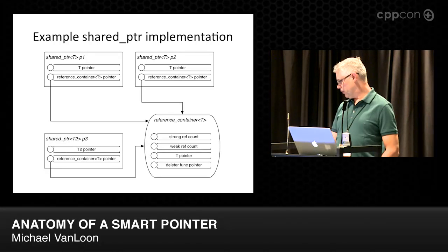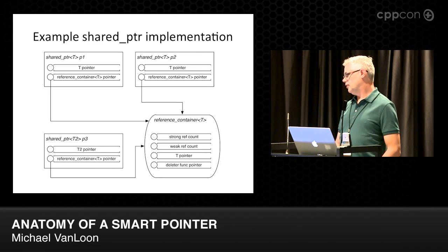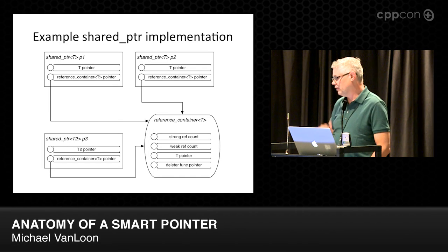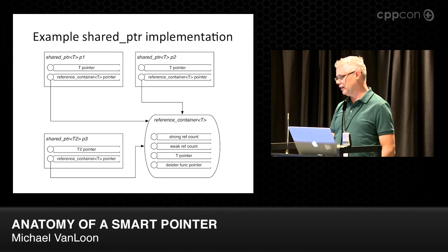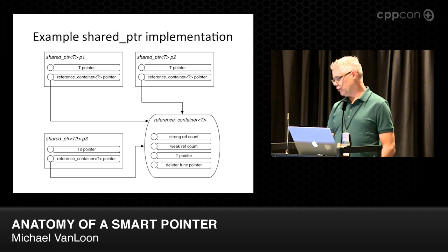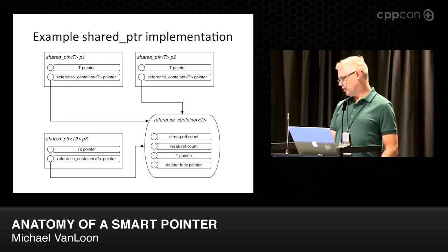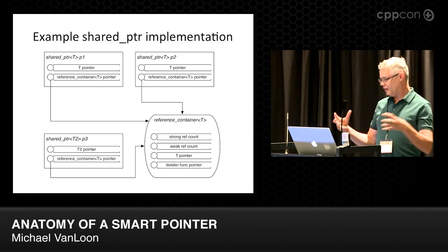Inside the reference-count block we also have a pointer to T and our deleter. Why do we have a pointer both in the shared pointer and in the reference-count block? You need it in the block for the deleter. But we don't want to dereference a pointer every time we need the answer to 'give me my pointer' — it's much more efficient to pull it straight out of the shared pointer itself. We can also do cool tricks like a dynamic cast to a related type and get a shared pointer back. Say T2 is derived from T and we want a shared pointer to T2 from P1 or P2 — we can do that. We'd get a container with a T2 pointer and a reference to the same reference-count block, because they refer to the same object.